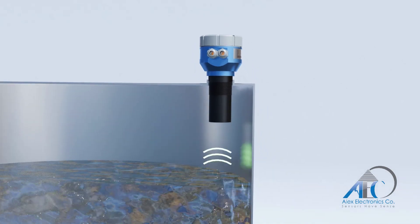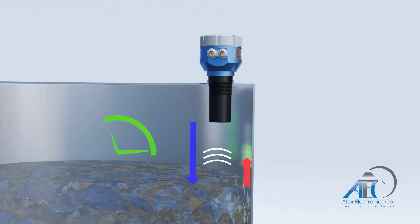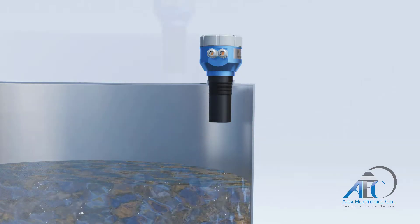The main principle of the ultrasonic level transmitter is measuring the time of flight of the reflected ultrasonic signals.